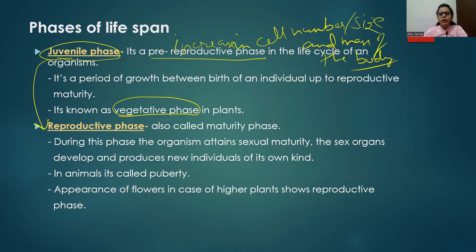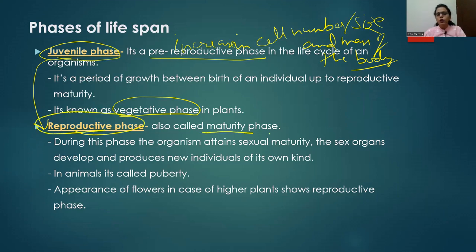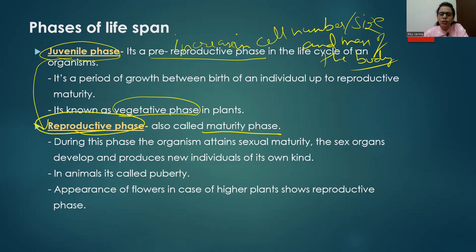Juvenile phase is the period of growth between birth of an individual up to reproductive maturity, and is known as vegetative phase in plants. After juvenile phase ends, the second phase starts — the reproductive phase, also called maturity phase — because during this phase the organism is actually capable of sexual reproduction and attains sexual maturity, producing new organisms of its own kind.